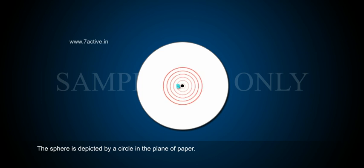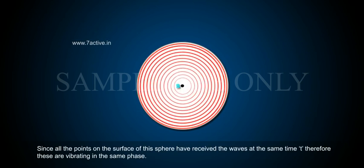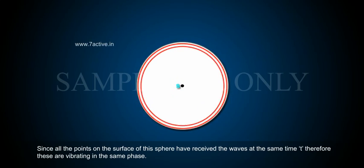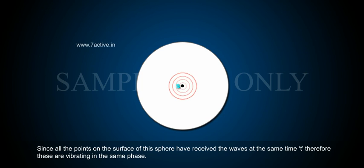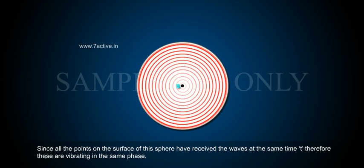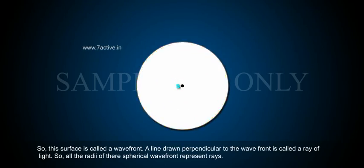The sphere is depicted by a circle in the plane of paper. Since all the points on the surface of this sphere have received the waves at the same time t, therefore these are vibrating in the same phase. So this surface is called a wavefront.